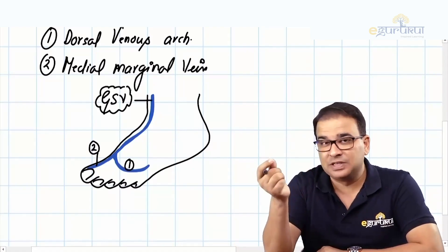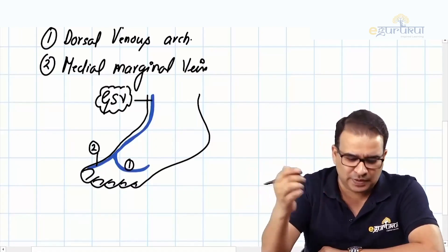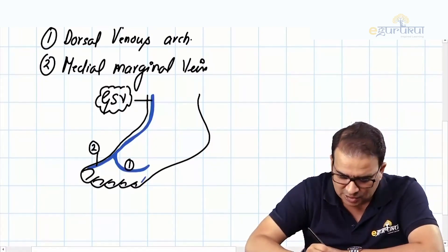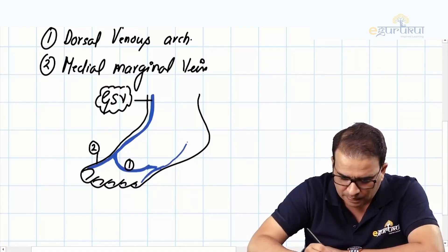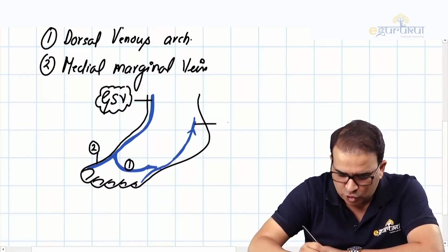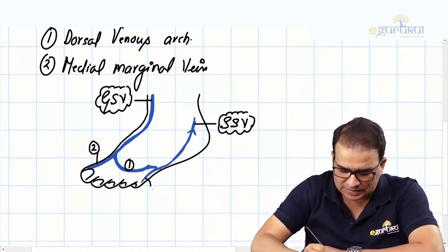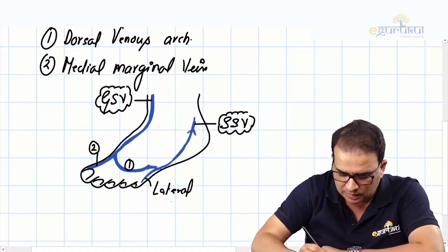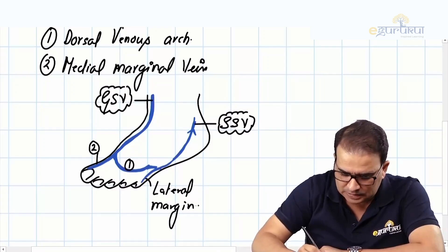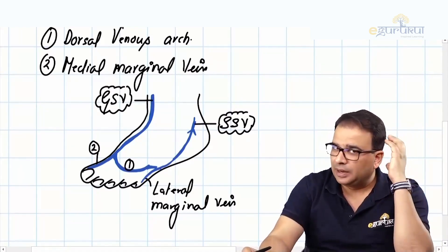In the popliteal fossa, the small saphenous vein was also present, piercing the roof of the popliteal fossa. The small saphenous vein is formed by the lateral marginal vein along with the dorsal venous arch — that is how the vein ascends upward. So the small saphenous vein (SSV) is formed by: one, the dorsal venous arch, and two, the lateral marginal vein.